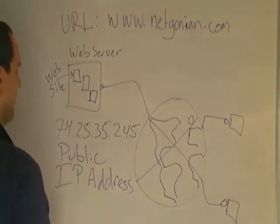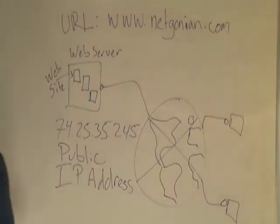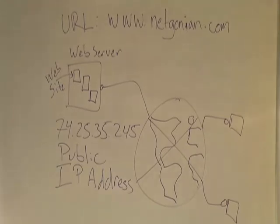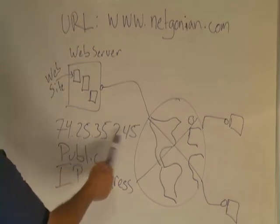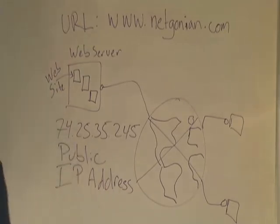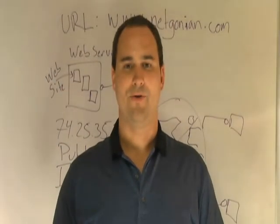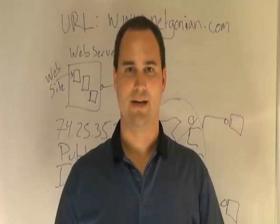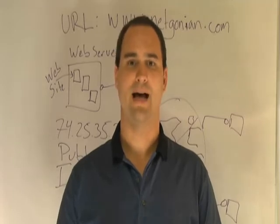So one of the first problems of the Internet was: how do we distinguish locations on the Internet? The solution was to give each location a special number like 74.25.35.245. You may recognize that as an IP address — specifically a public IP address. Public IP addresses are regulated by a large corporation known as the Internet Corporation for Assigned Names and Numbers, also known as ICANN.